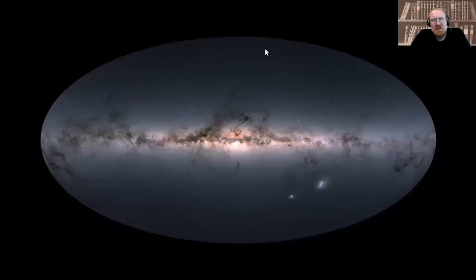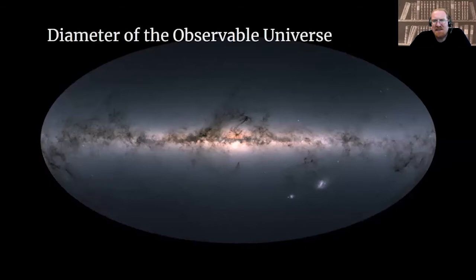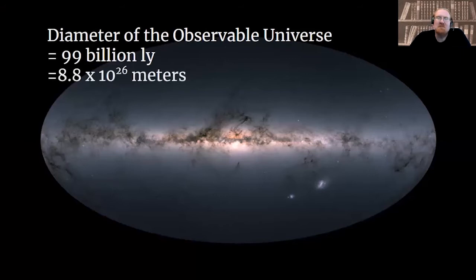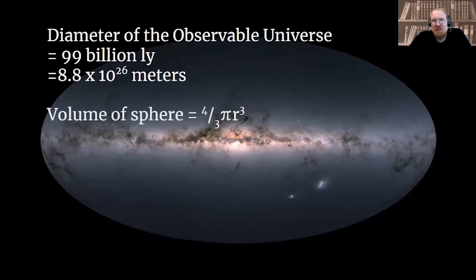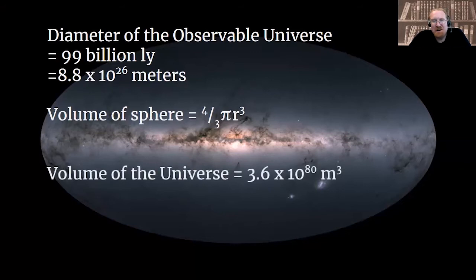Step one to getting to this number starts at the entire universe, which has a diameter of about 99 billion light years, or 8.8 times 10 to the 26 meters. If you turn that into a radius and plug it into the formula for the volume of a sphere, you get a volume of the entire universe of 3.6 times 10 to the 80 cubic meters. That's step one.